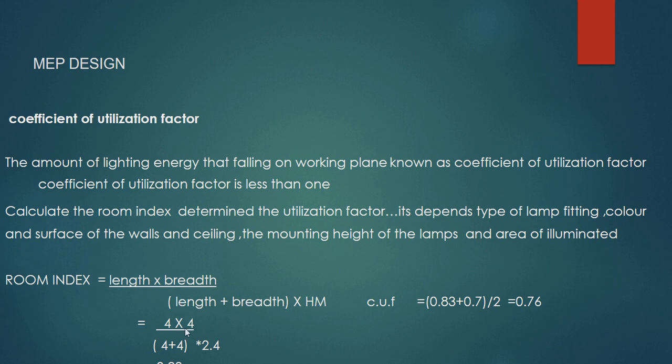The room index formula is: length into breadth divided by (length plus breadth) into mounting height. We have the length as four meters in that area, divided by (four plus four) into 2.4 according to the NEC standard. We will get 0.83. The coefficient of utilization factor is 0.83 to 0.7 according to IP 20 utilization factor. Ceiling level is 70 percent and the floor level is 20 percent.